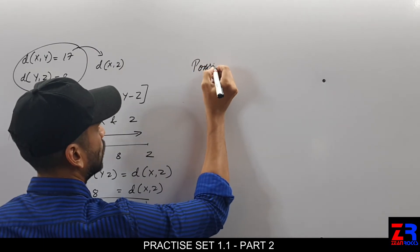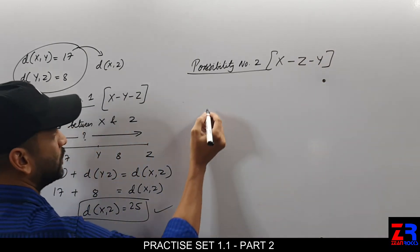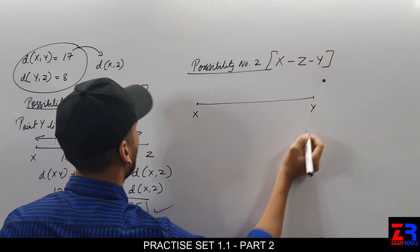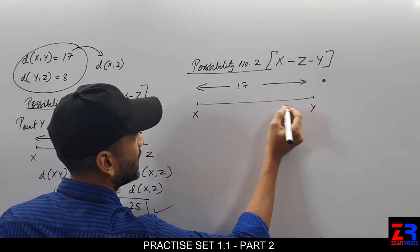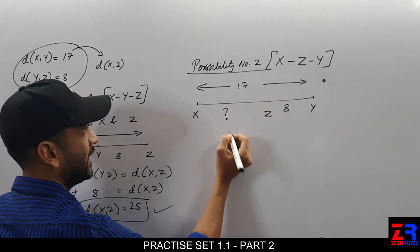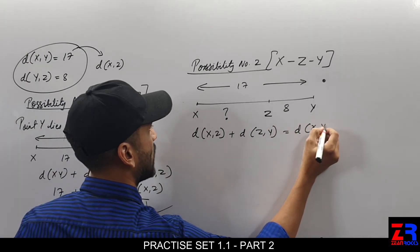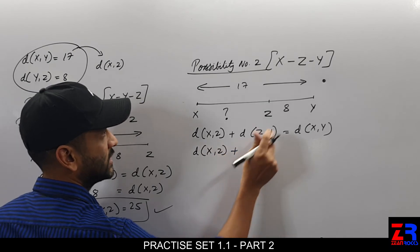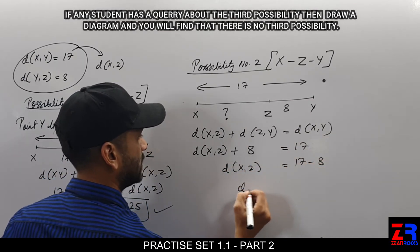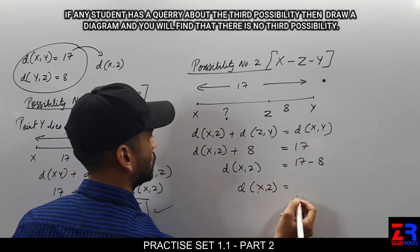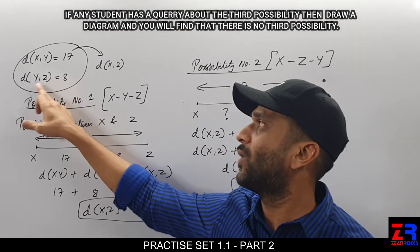Possibility number 2: X–Z–Y, meaning point Z lies in between X and Y. XY is 17 and YZ is 8. Distance XZ plus distance ZY equals distance XY. ZY is known as 8 and XY total is 17. Therefore distance XZ is equal to 17 minus 8, so distance XZ is equal to 9.